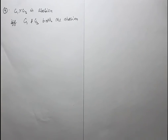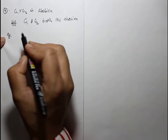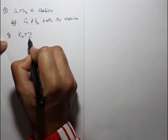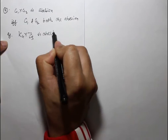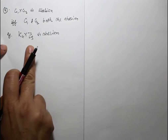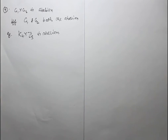Property 4: G1 cross G2 is abelian if and only if both G1 and G2 are abelian. For example, K4 cross Z3 is abelian because K4 is abelian and Z3 is abelian. This is an important property whose proof will be covered in the next lecture.